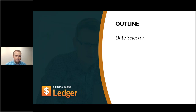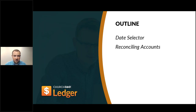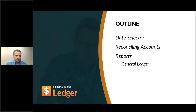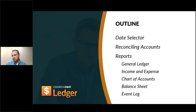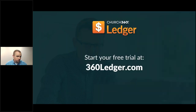Our outline starts with the date selector — that becomes especially important as we get into reconciliation and reporting because it's all tied to your date selector. I'm actually going to start with a quick review from yesterday, then get into the date selector, then move on to reconciling accounts — that month-end process where you take your bank statement, look at what's in Church360 Ledger, and make sure it all matches. Then we'll get into reports: general ledger, income and expense, chart of accounts, balance sheet, and the event log.